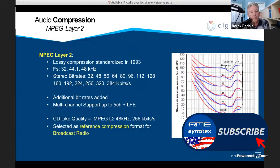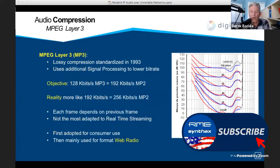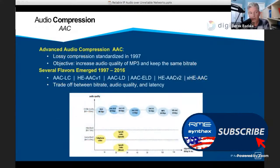Several compression algorithms were developed over the years. MP2 was about creating CD quality audio at 256 kilobits per second and was selected as a reference compression ratio for broadcast radio. Later, MP3 came along with one goal: cut it in half — to 128 kilobits per second for the same perceived audio quality as MP2. That's basically been the web radio format to this day. More recently, several other flavors have emerged.